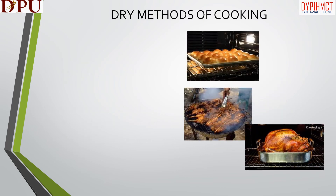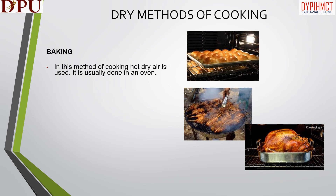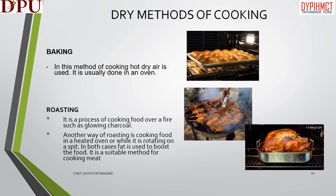In this slide we will discuss about dry methods of cooking. The first method is baking, in which hot dry air is used; it is usually done in an oven. The next dry cooking method is roasting — a process of cooking food over a fire such as glowing charcoal, or in a heated oven or while rotating on a spit. In both cases fat is used to baste the food; it is a suitable method for cooking meat.